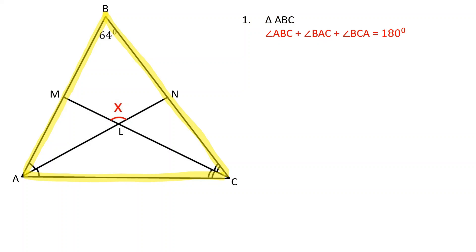The sum of the interior angles of a triangle is equal to 180 degrees. Therefore, angle BAC plus angle BCA is equal to 180 minus 64, which is 160.